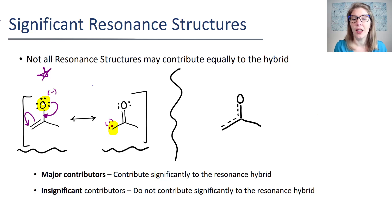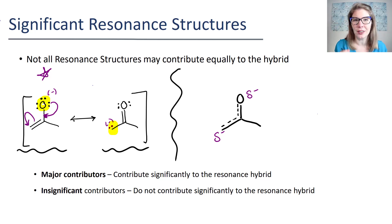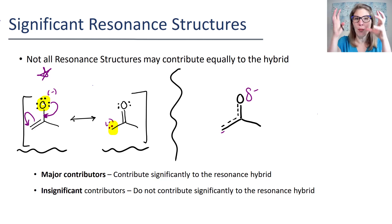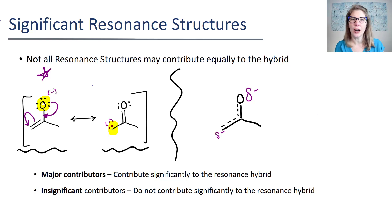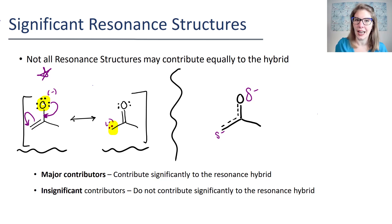Therefore the structure on the left, the one that I have the star over, is going to be more significant. It's going to contribute more heavily to the resonance hybrid because it's better showing where the electrons are in the structure. The way that we can draw this in the resonance hybrid is when we put in our partial negatives — instead of drawing the delta symbols the same size, we can make the delta bigger on the oxygen to say more electron density is around that oxygen than this carbon, which is going to have a smaller delta symbol. And that's how we would illustrate that these two resonance structures do not contribute equally to the hybrid.